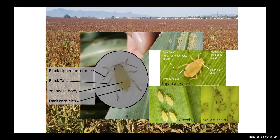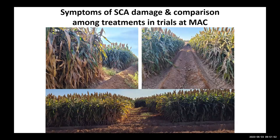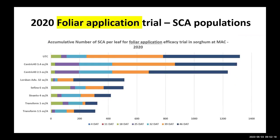The corn leaf aphid and greenbug start early in the season and don't tolerate our heat here — you can find them after the boot stage in sorghum, so that's a little bit of relief. We are not dealing with all three at the same time. Looking at symptoms in our plots, this insect is capable of just destroying the whole plant, and at certain times with high populations you can even end up with sooty mold visible on the leaves due to the amount of honeydew.